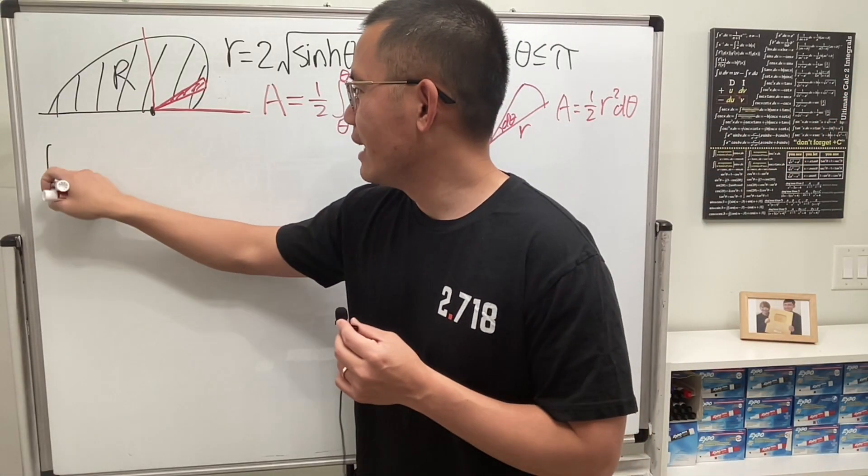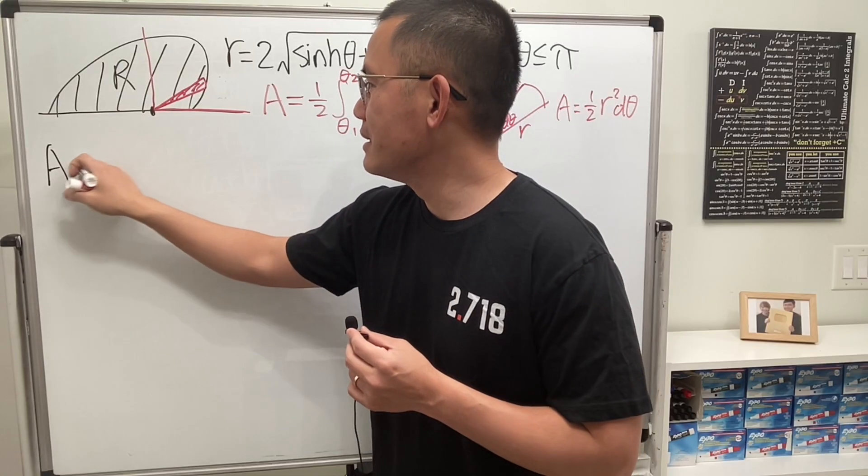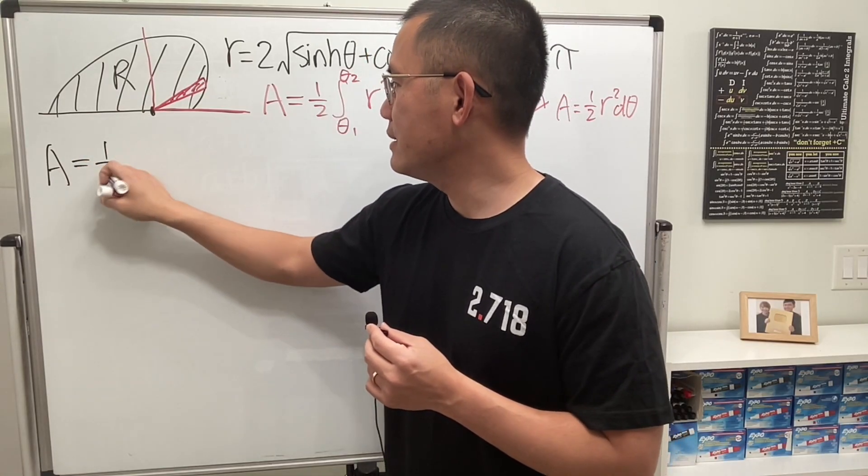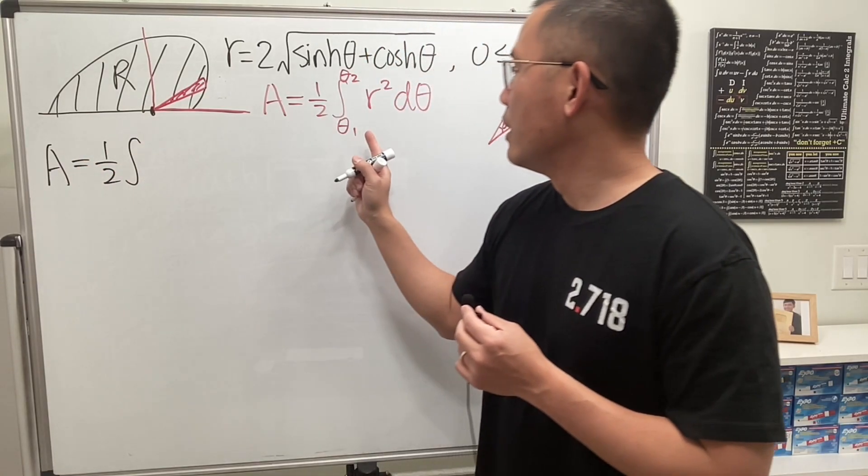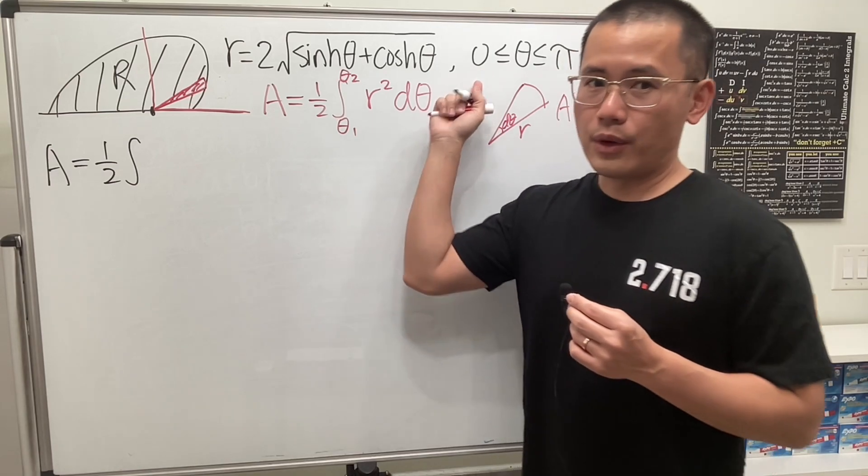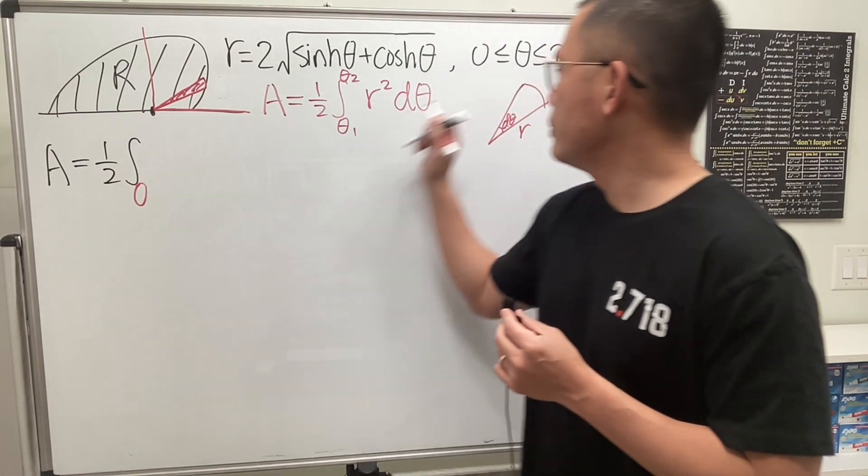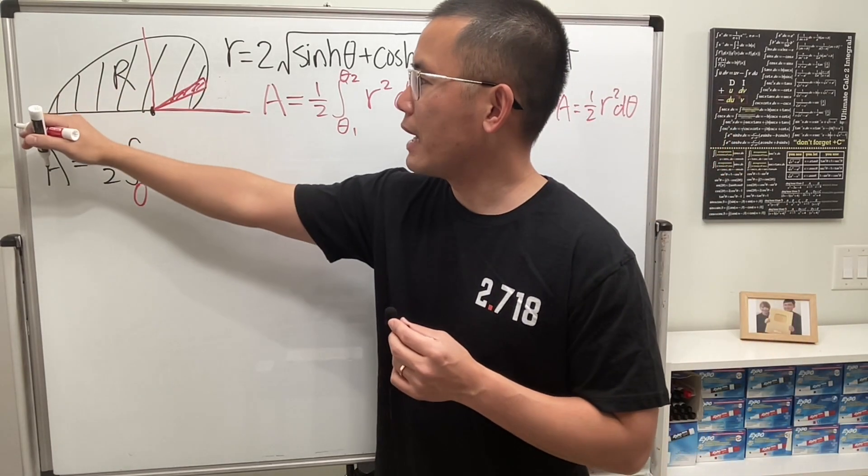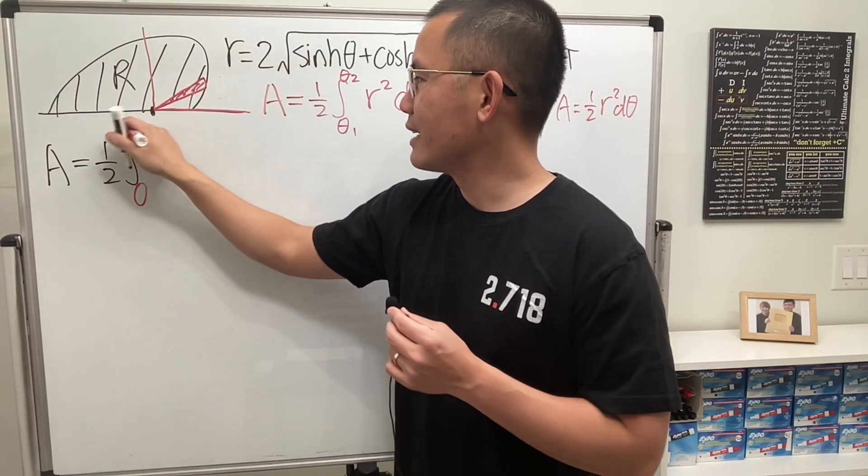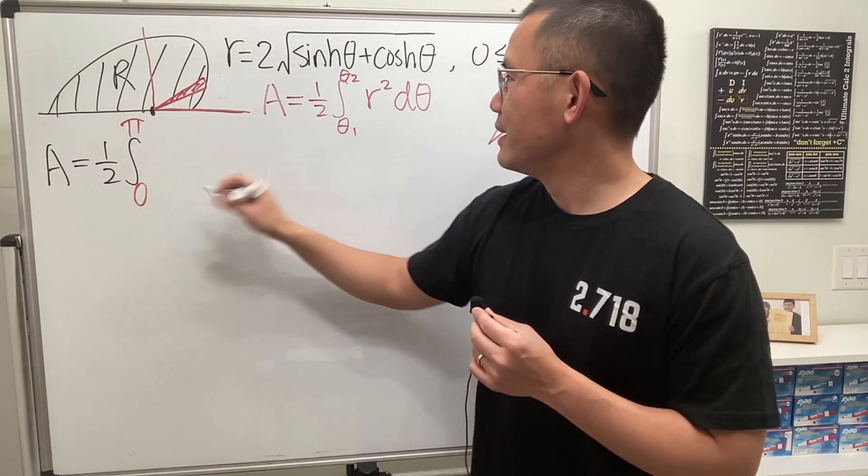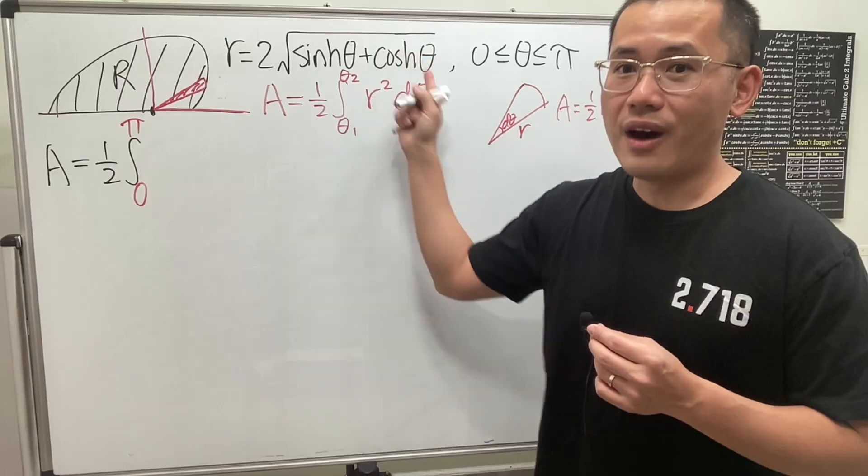Okay, so all we have to do is area for the capital R is equal to 1 half in the front, and then we have the integral. Theta 1 is the starting theta value, which is 0. Theta 2 is our ending value, which is pi. 0 to pi, like so.